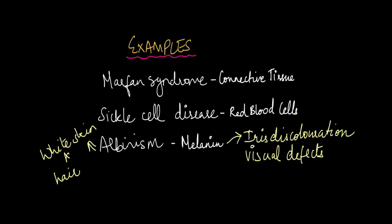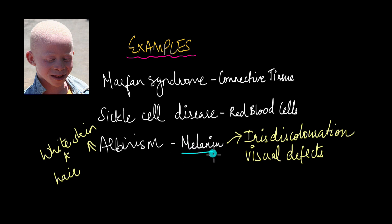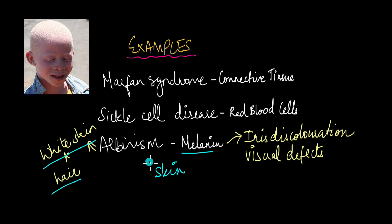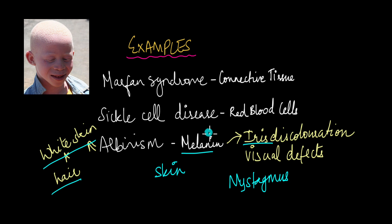Another example is albinism, a condition that affects the production of melanin — the pigment that gives skin its color. The absence of melanin causes the person to have extremely white skin and hair. Apart from affecting the integumentary system, albinism causes effects in the sensory system as well. It causes discoloration of the iris, since eye color is also controlled by the amount of melanin in the body. It also causes visual defects like nystagmus and other visual problems. This is how, in albinism, a mutation in a single gene causes a variety of effects — making it a clear example of pleiotropy.